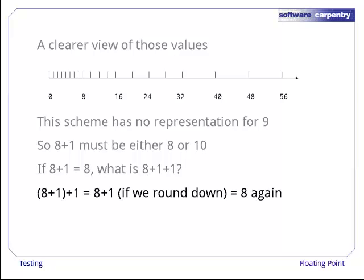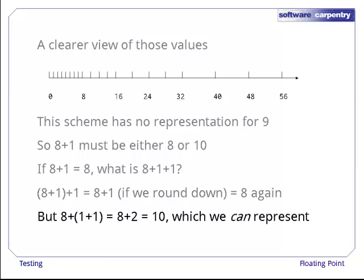If we add from the left, 8 plus 1 is 8, plus another 1 is 8 again. If we add from the right, though, 1 plus 1 is 2, and 2 plus 8 is 10. Changing the order of operations can make the difference between right and wrong.